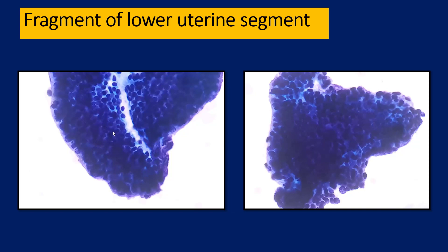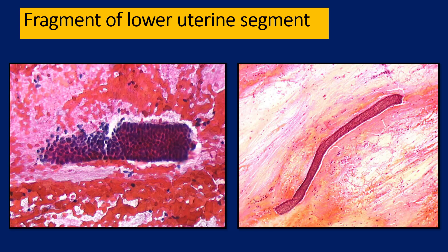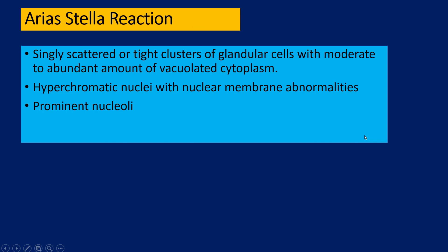We have discussed hyperchromatic crowded group clusters in the previous talk, and lower uterine segments are one of the differential diagnoses. The straight edges are very helpful. Look at the cells at the periphery — you will find pretty round, uniform nuclei with sharp nuclear outlines. There is another one from the Bethesda Web Atlas with this geometric figure — very straight, looks like a rectangle. Sometimes they are present as tall, long organoid structures which are appreciable on low power.